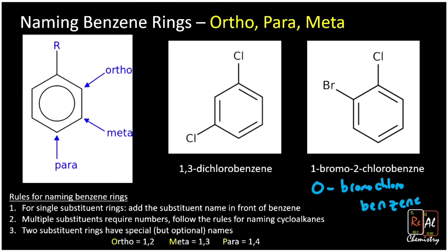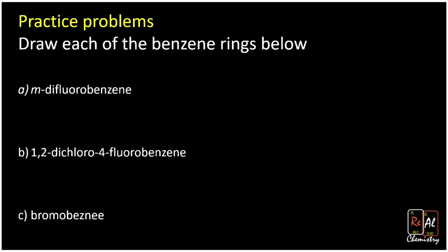Let's go the other direction. Using ROMP with numbering one, two, three, four, let's draw meta-difluorobenzene. For meta, R is at position one and the second substituent is at position three. We draw the benzene ring and the first fluorine goes up top — the alphabetically first substituent — then the other fluorine goes at the meta position, which is one, two, three — right at the third carbon.